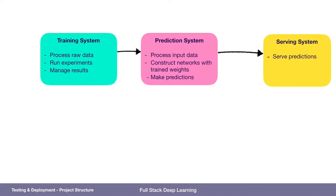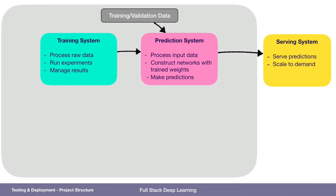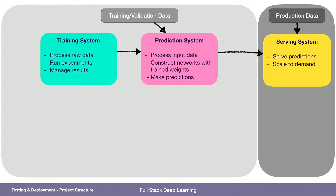That deployment is known as serving. The serving system serves up the predictions and can scale to demand. When we think about what data is used for the different systems, training and validation data is used with the training system to generate the prediction system. But at production time, we have a different dataset — the production data we've never seen before, and by definition can't see before we put the model in production. That's the data the serving system will see.